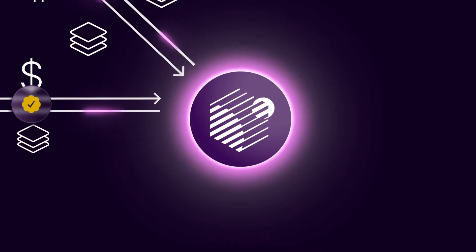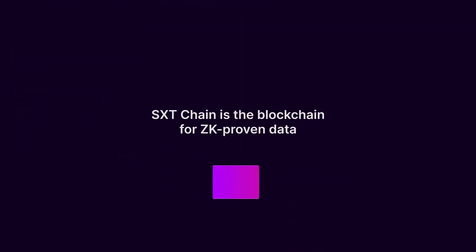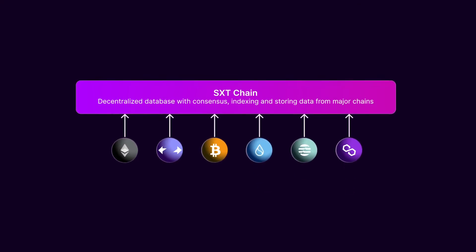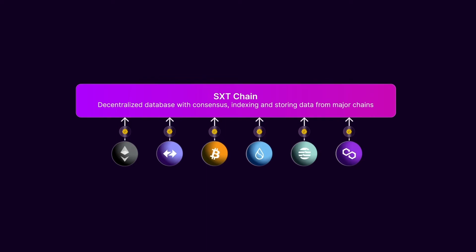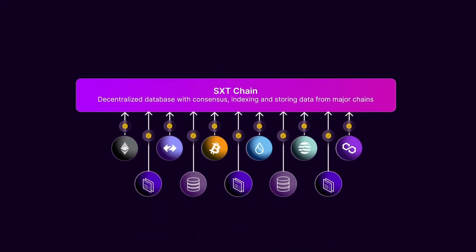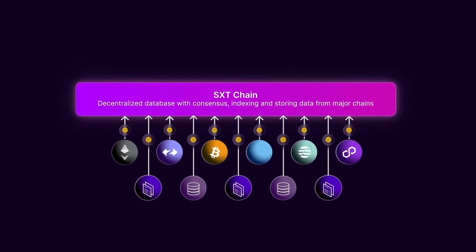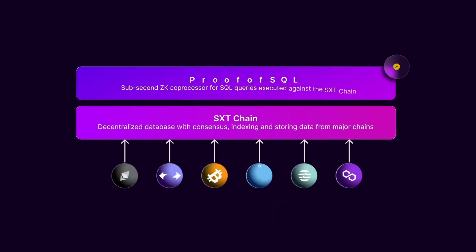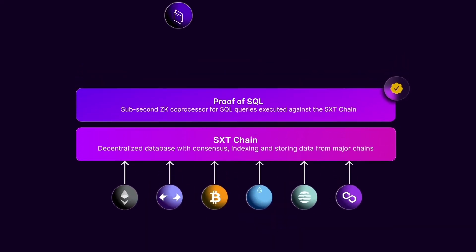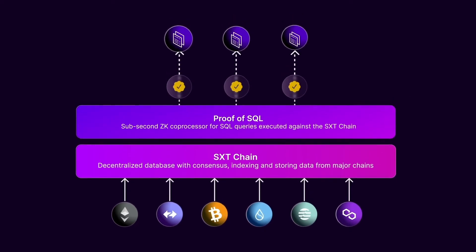Welcome to SXT Chain. SXT Chain is the blockchain for ZK-proven data. SXT Chain indexes data from Ethereum, ZK Sync, and other EVM and Move blockchains in a cryptographically guaranteed way. Validators also sign commitments on client data loaded from off-chain sources like your applications. This data is stored across a decentralized network of database nodes. Our research team pioneered a sub-second ZK coprocessor for SQL queries, so your smart contract can query data from the chain and data from your app in a verifiable way.